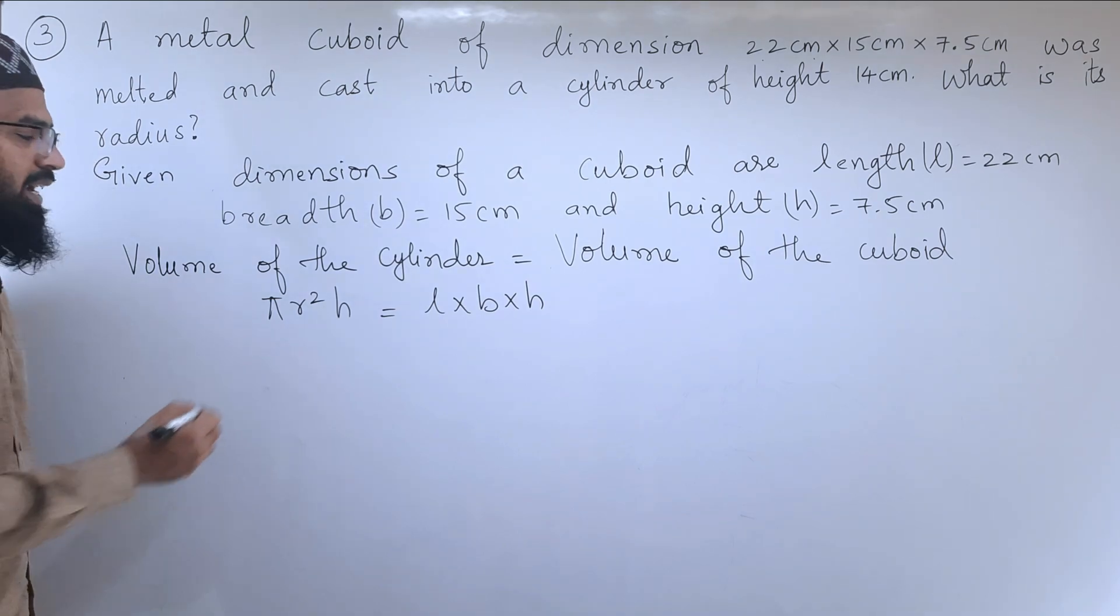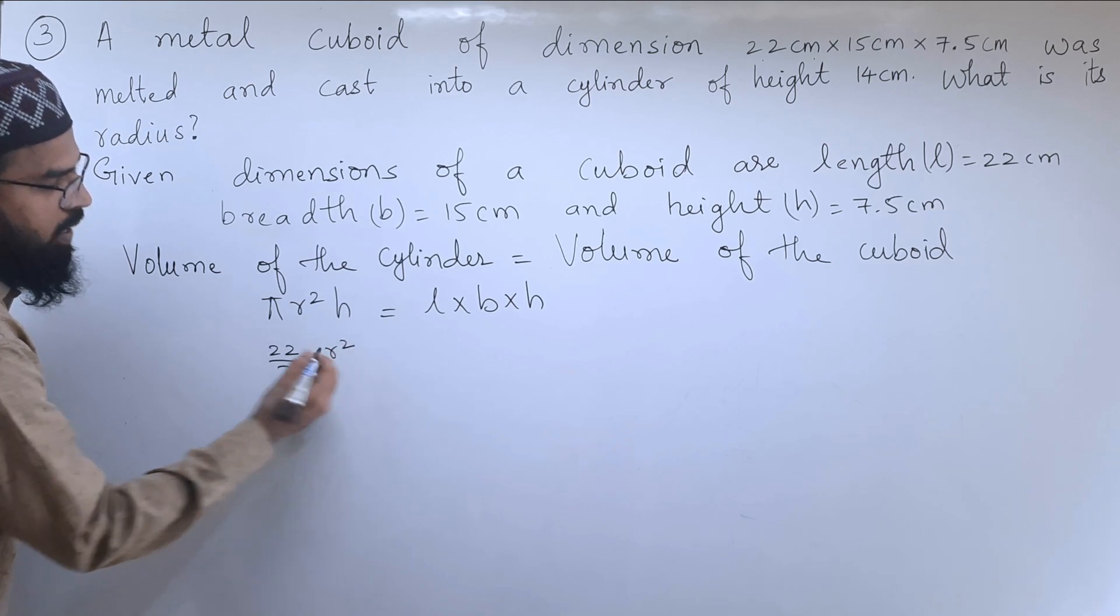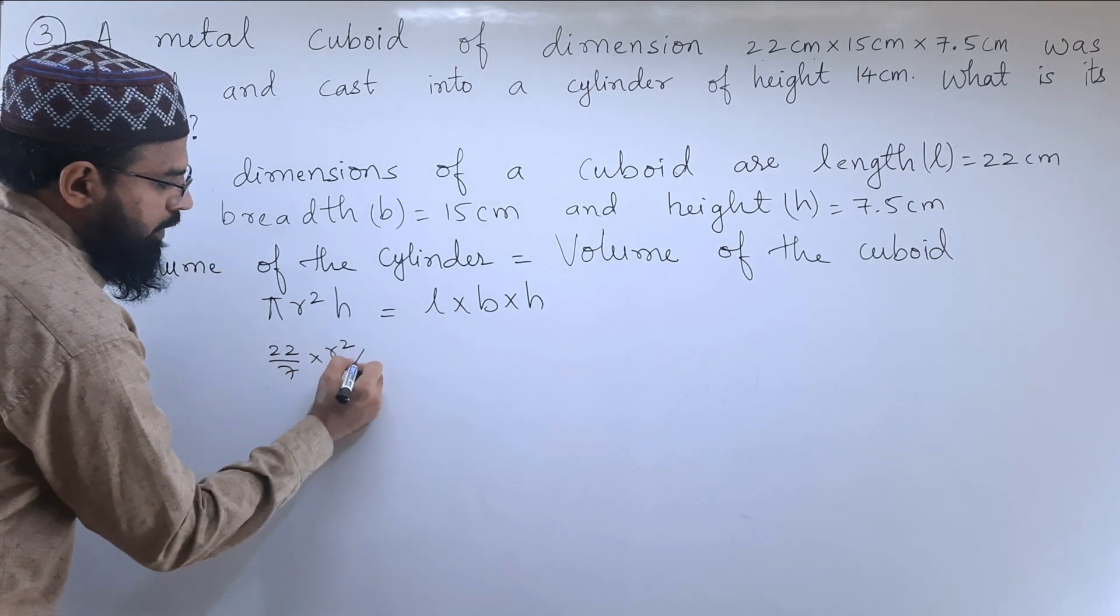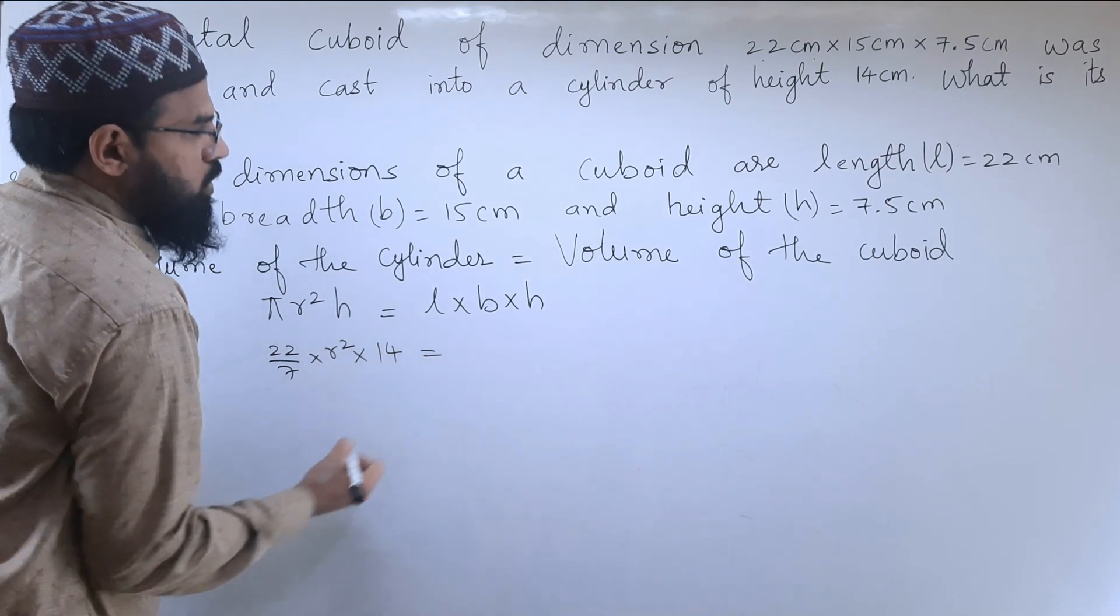Now we will substitute and take the values. That is π is 22 by 7, R² we need to find out. H is given, that is 14 centimeter, equals to...